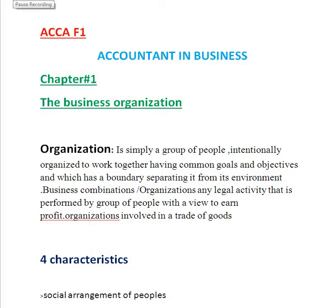Hello everyone, today we are discussing ACCA paper F1, which is Accountant in Business. We are starting from Chapter 1, which is the Business Organization. First we need to understand what is an organization. An organization is simply a group of people intentionally organized to work together, having common goals and objectives, and which has a boundary separating it from its environment.